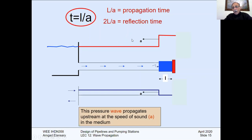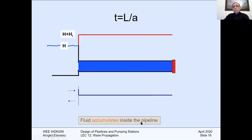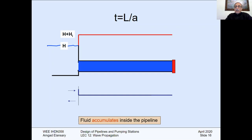2L/A means the reflection time. If we go back from the reservoir, it takes another L/A, so 2L/A is when we return to the valve again. This pressure wave propagates upstream at the speed of sound A in the medium. At time exactly L/A, all the pipe will experience a pressure rise of delta H, or H plus H_I. All velocity in the pipe will be zero, the pipe will be stretched, and all the fluid will be compressed. Fluid accumulates inside the pipeline due to this stretch and accumulation.